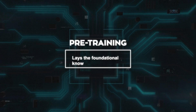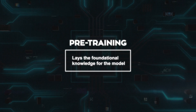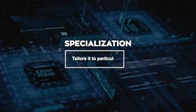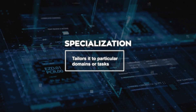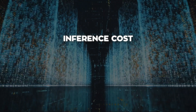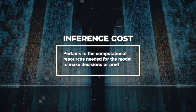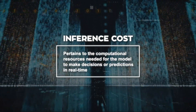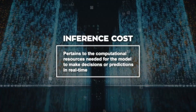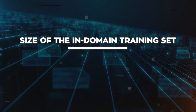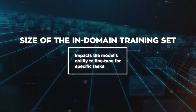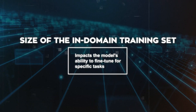The pre-training phase lays the foundational knowledge for the model, while the specialization phase tailors it to particular domains or tasks. The inference cost pertains to the computational resources needed for the model to make decisions or predictions in real time, and the size of the in-domain training set impacts the model's ability to fine-tune for specific tasks.